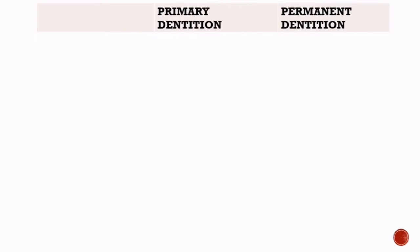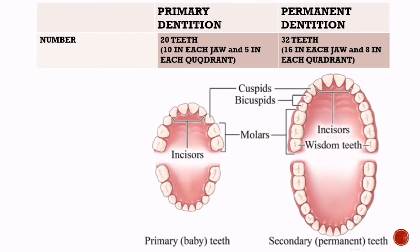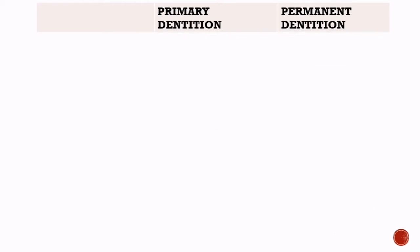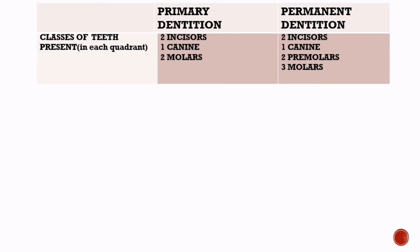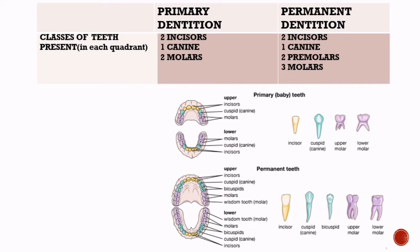There are 20 teeth in primary dentition with 10 in each jaw and 5 in each quadrant, whereas there are 32 teeth in permanent dentition with 16 in each jaw and 8 in each quadrant. In primary dentition, there are 2 incisors, 1 canine, and 2 molars in each quadrant. Premolars and third molars are not present in primary dentition. Whereas in permanent dentition, there are 2 incisors, 1 canine, 2 premolars, and 3 molars in each quadrant.